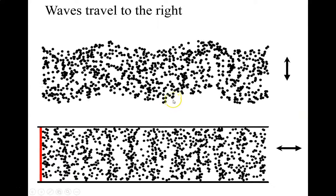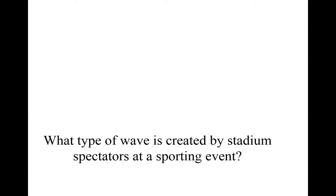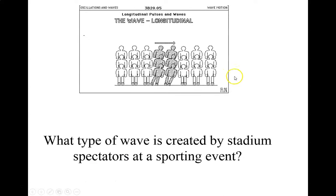What type of wave do you create at a stadium when you do the wave? The people are the medium. You jump up and down, so the wave travels left to right — that is a transverse wave. If you wanted to create a longitudinal wave at the stadium, you'd have to oscillate left and right, though your fellow spectators probably wouldn't know what you're doing.